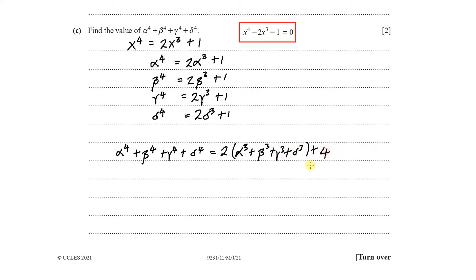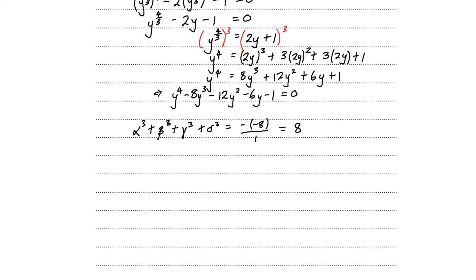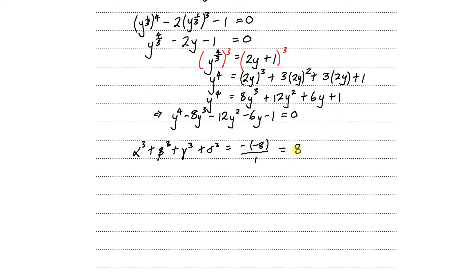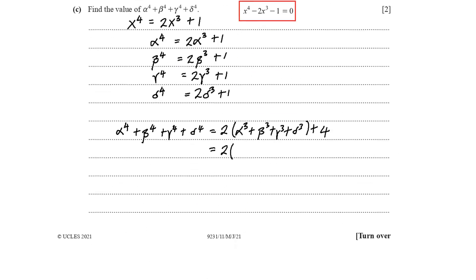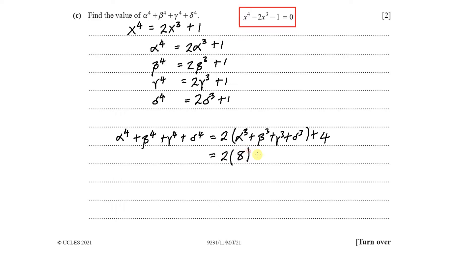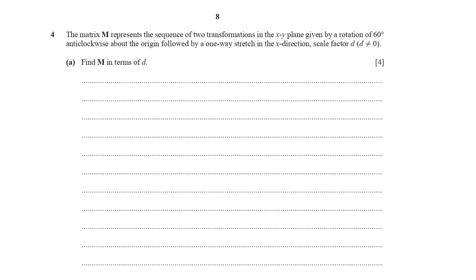We found earlier that alpha³ plus beta³ plus gamma³ plus delta³ equals 8. So we have 2 times 8 plus 4, which equals 16 plus 4, giving us 20. The answer to part (c) is 20, and that concludes Question 3.